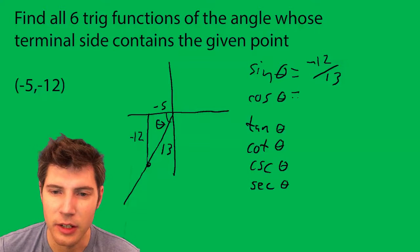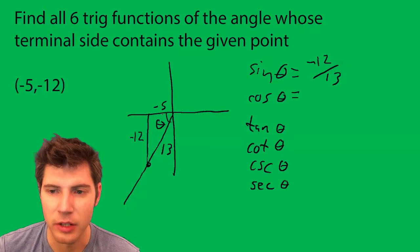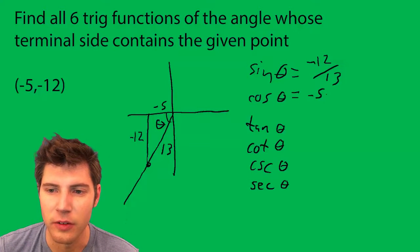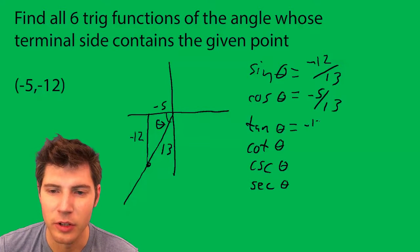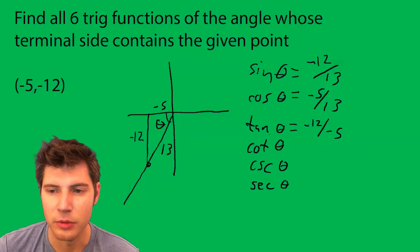The cosine is adjacent over hypotenuse, so it's -5/13. Tangent is opposite over adjacent, so it's -12/-5, which is equal to 12/5.